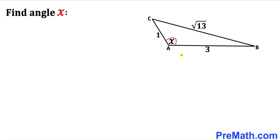Welcome to pre-math. In this video we have got triangle ABC, as you can see in this diagram, such that its side lengths are 1, 3, and square root of 13 respectively. And now we are going to calculate this angle x.